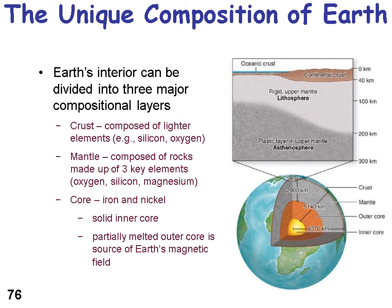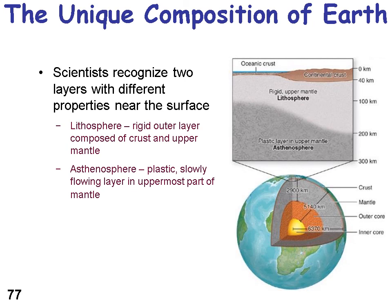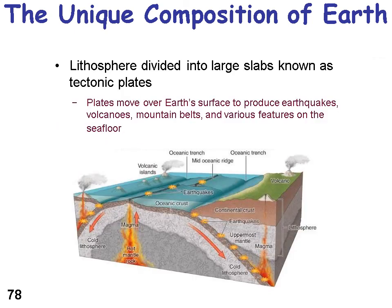The Earth has a unique composition, divided into three compositional layers: crust, mantle, and core. It has a solid inner core and a partially melted outer core, which is the source of the Earth's magnetic field — critical for life to exist on the surface. The Earth's crust is divided between continental crust and oceanic crust, and underneath is a rigid upper mantle we call the lithosphere, and a plastic layer in the upper mantle we call the asthenosphere.